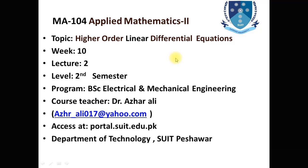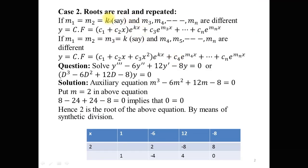This video lecture is the continuation of my previous video lecture. In the previous video lecture, we have learned about the nature of the roots of characteristic equations. We have already discussed case number one: when the roots of the characteristic equation are real and different, then the complementary solution will be equal to c1·e^(m1x) + c2·e^(m2x) + c3·e^(m3x) and so on for the nth root cn·e^(mnx).